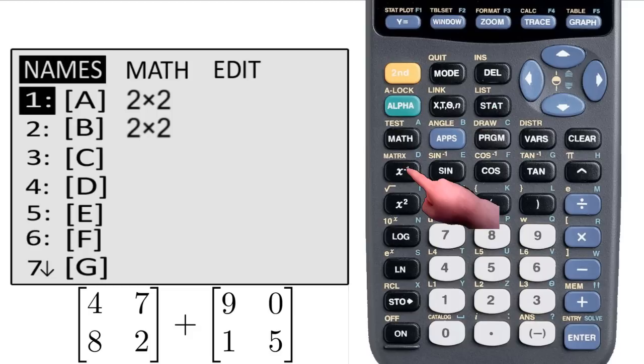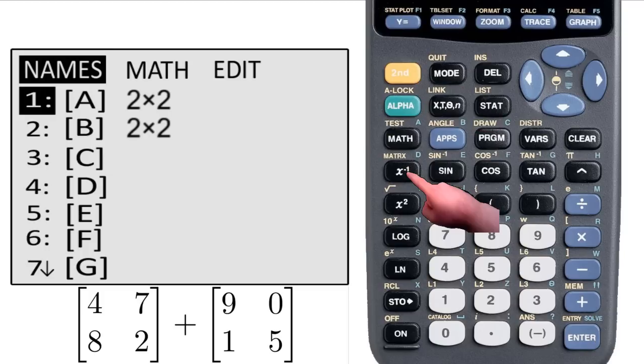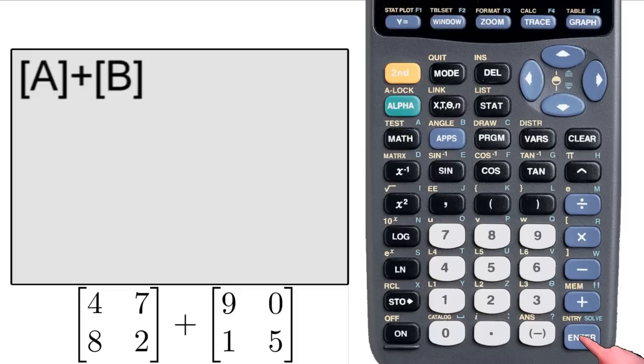So I go back to the matrix menu, select A to put on my home screen, hit plus, go back to the menu and select B. Hit enter and it returns the sum of the two matrices.